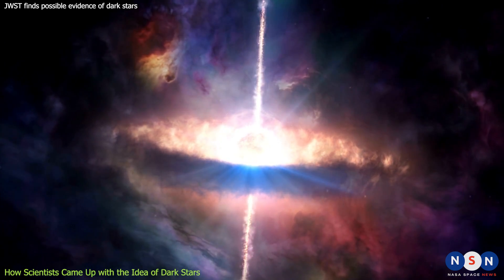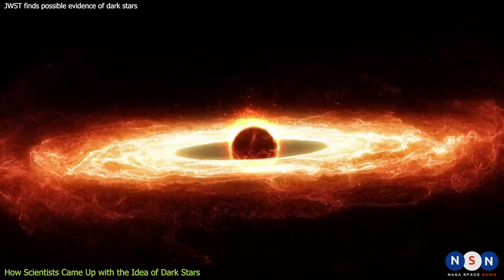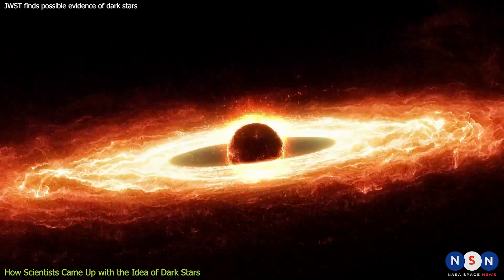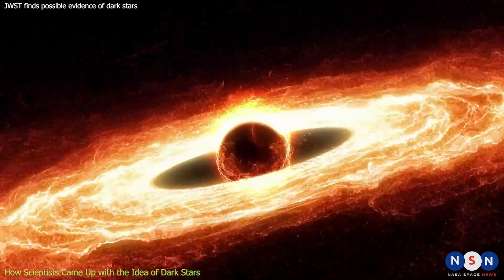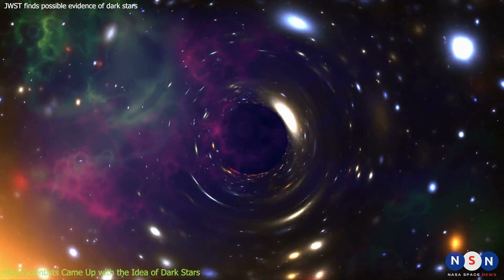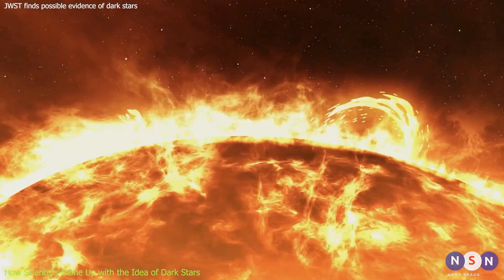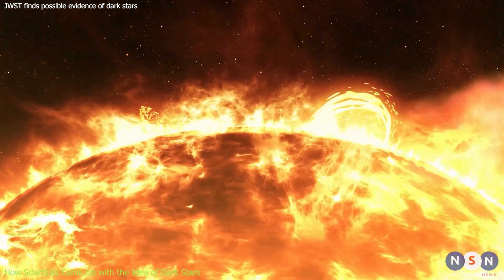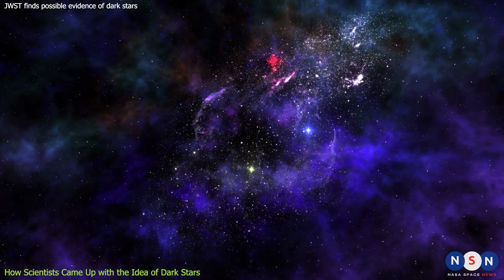But how massive would these dark stars be? According to Fries's calculations, they could be anywhere from 10 to 1,000 times more massive than the Sun, and up to 10 billion times more luminous. They would also have very low surface temperatures, around 10,000 degrees Kelvin, compared to 6,000 degrees for the Sun. This means that they would emit mostly infrared light, rather than visible light.